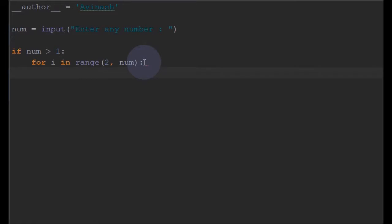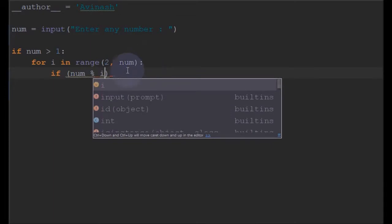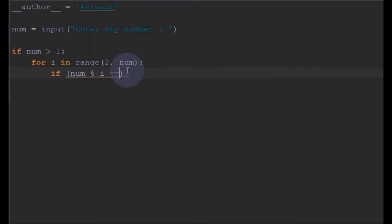what we do is check each number. If num % i, that is the remainder, if the remainder is zero, we'll simply print 'number is not